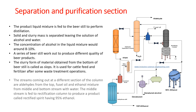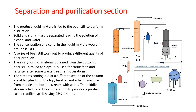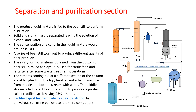Fuse oil and ethanol mixture come from the middle stream, and water from the bottom stream. The middle stream is fed to a rectification column to produce a product called rectified spirit, having 95% ethanol. Rectified spirit is further converted to absolute alcohol in an anhydrous still using benzene as the third component.